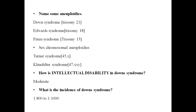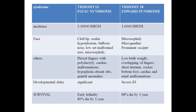Edwards and Patau syndromes both have severe intellectual disability and 80% lethality by one year of age. Edwards syndrome features include overlapping of fingers. Risk of Down syndrome by maternal age: 40–44 years risk is 1 in 100; after 45 years it is 1 in 50; 15–29 years risk is 1 in 1550; 30–34 years is 1 in 800; 35 years is 1 in 350. These figures are very important to remember.